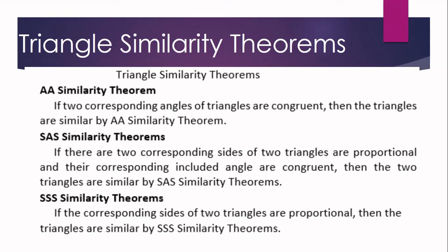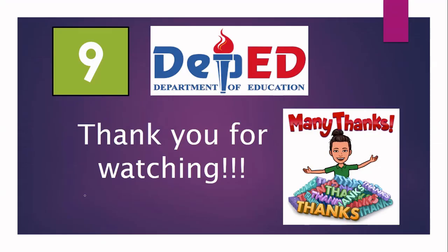So again, the three triangle similarity theorems are: number one, AA similarity; number two, SAS similarity — the angle must be the included angle and the two sides must be proportional to the corresponding sides; and number three, SSS similarity — the three corresponding sides of the two triangles must be proportional. This is all about the triangle similarity theorems. Thank you for watching!